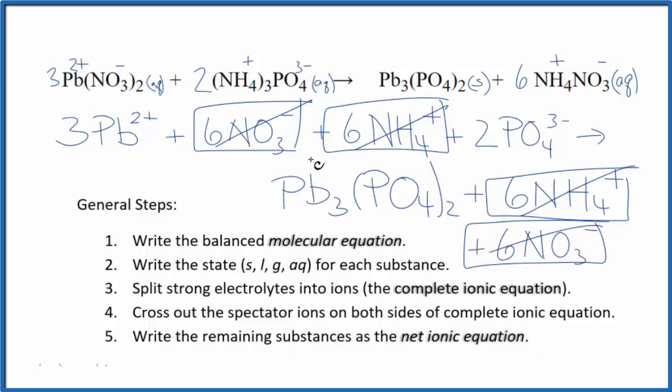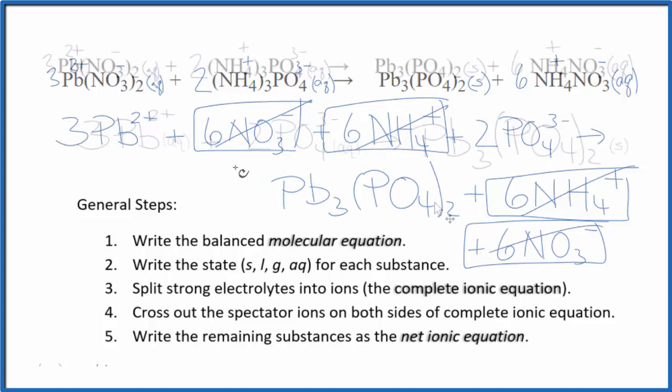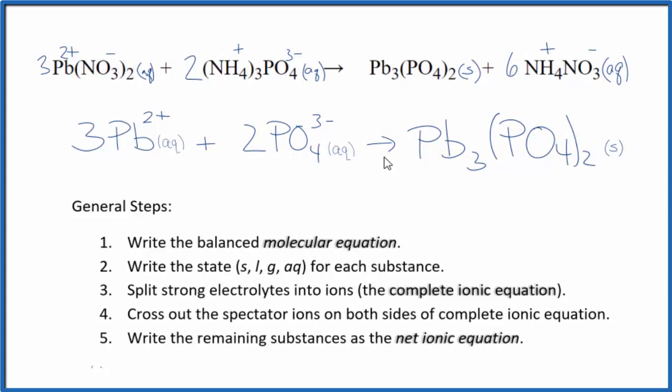I'll clean this up, add the states. We'll have our net ionic equation. And this is the balanced net ionic equation for lead 2 nitrate plus ammonium phosphate. You'll notice that charges balance 3 times 2 plus. That's 6 plus. Then, we have 2 times 3 minus, 6 minus. So, they balance out. Give us a net charge of 0. Neutral compound over here, net charge of 0. And if you count the atoms up, they're balanced as well.